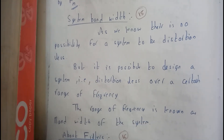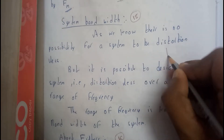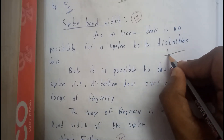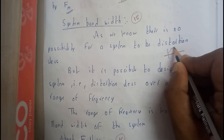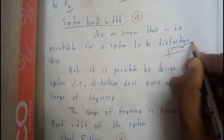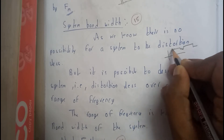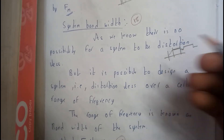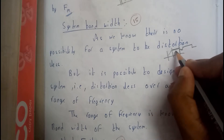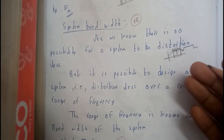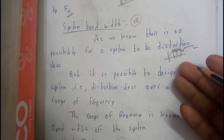Let us assume there is a system like this. If the system performance is at 0 at some points and 100 at others, and it randomly increases and decreases, then the range at which it is maximum — almost 99.99 — that frequency range is what we call the bandwidth of the system.